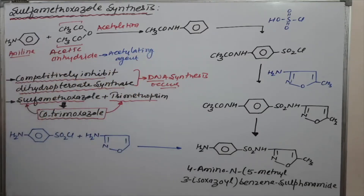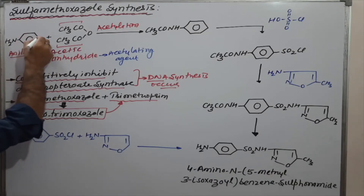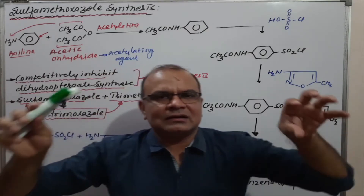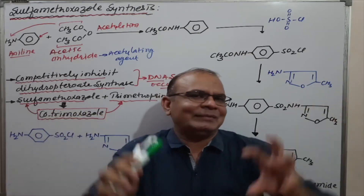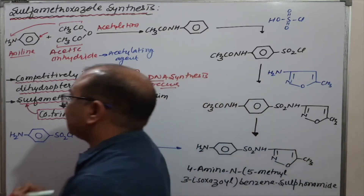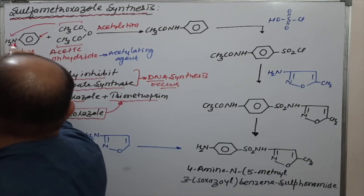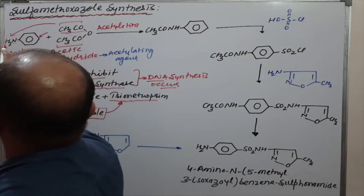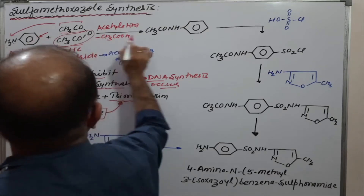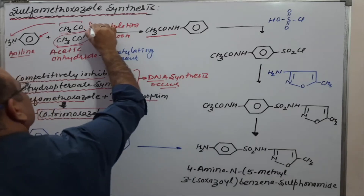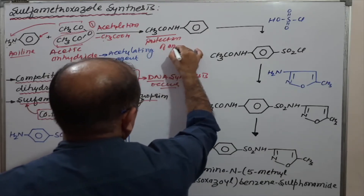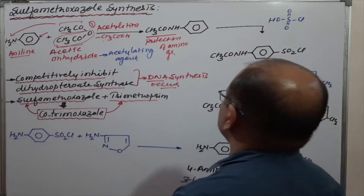Both positions — the amino group and the benzene ring positions — are sensitive sites. However, the amino group is more reactive compared to the benzene ring positions because the amino group has a lone pair of electrons. Therefore, the acetyl moiety attaches to the amino group with removal of CH₃COOH. This is reaction number one: protection of the amino group.